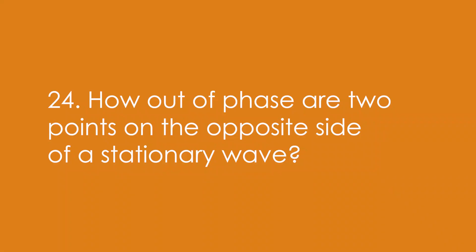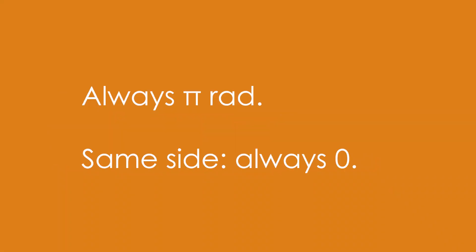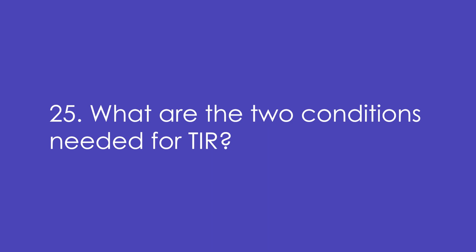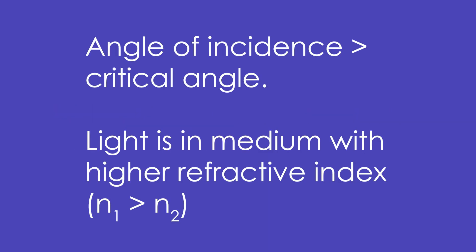24. How out of phase are two points on opposite sides of a stationary wave? Always pi radians — it doesn't matter where they are. If they're on the same side it's always zero. 25. What are the two conditions needed for total internal reflection (TIR)? The angle of incidence has to be greater than the critical angle, and light has to be in the medium with the higher refractive index.